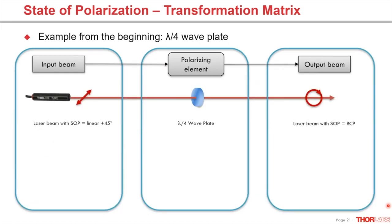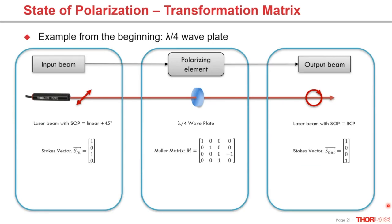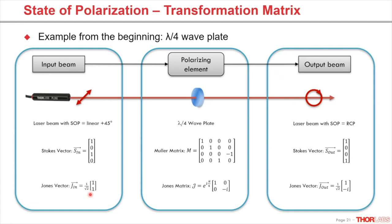Our example with the quarter wave plate: the first calculation shows the Stokes vector for a linear plus 45 degree polarization, the Müller matrix for the retarder, and the Stokes vector for the transformed output state of polarization — in this case, right circular. The second calculation gives the same result using the Jones matrix and vectors.